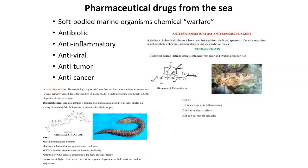Regarding the pharmaceutical industry specifically, all kinds of medicine — anti-inflammatory, antibiotic, antiviral, anti-tumor, anti-cancer — the raw materials for all these medicines are basically coming from the marine ecosystem. Marine life gives us life by producing these pharmaceutical drugs.